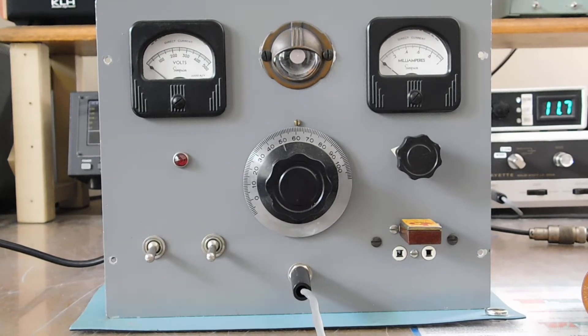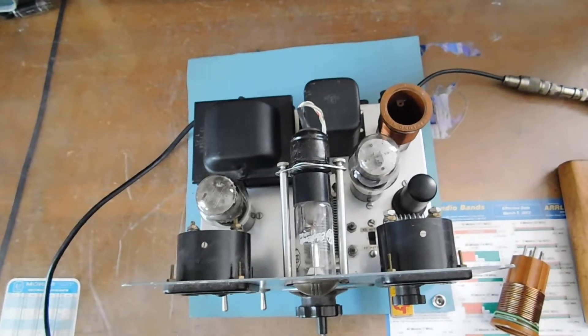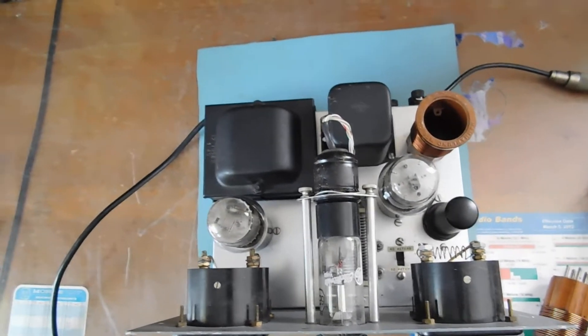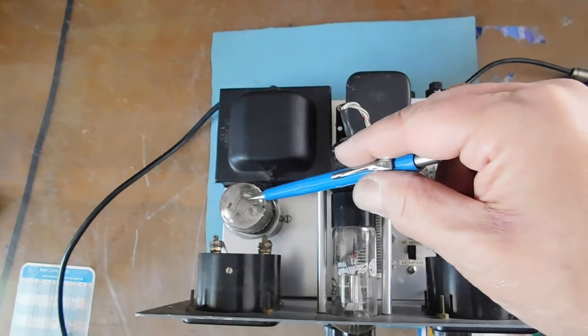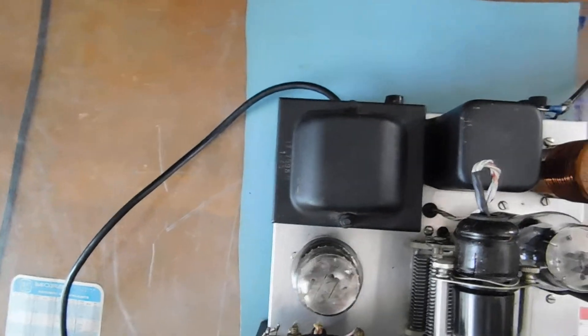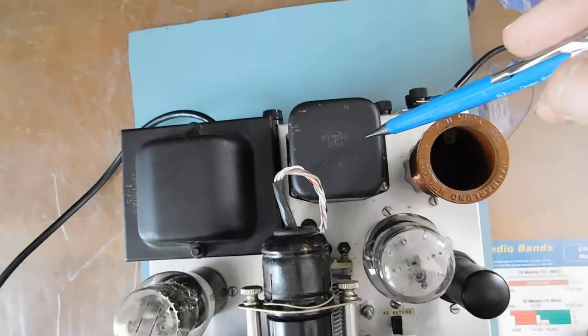So let me show you what it looks like under the hood. Okay, here's what it looks like inside. You got a rectifier, 5V4, very nice looking transformer here, a stand core choke.